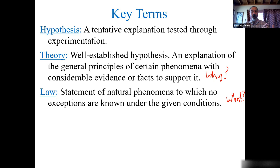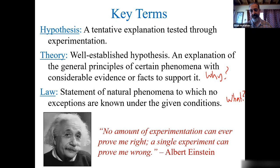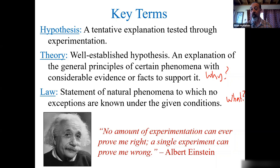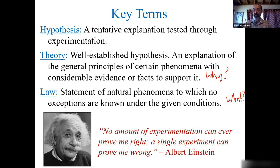If you're testing a law, you may not know why it happens, but you're testing whether it happens under all conditions. Einstein says no amount of experimentation can ever prove you right — you can have endless experimentation, and later theories can be proven false. In a lot of sciences, you create a null hypothesis — the hypothesis you're trying to disprove — because it only takes one experiment to disprove something. You cancel out the null hypothesis to support your alternative hypothesis.